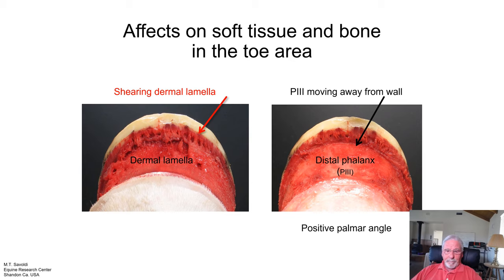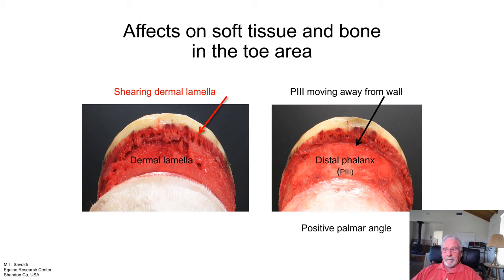Here we can see where the bone actually is in this foot. Can you see how the capsule is now developing a short-looking toe? It's not a natural development — it's caused by pathologies within the foot, damage and stress shortening the wall length in the toe area. Plus the bend has shortened it quite a bit. If that bend is allowed to settle down, that toe will straighten out and you'll have a healthier-looking toe.